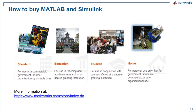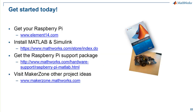It's easy to get access to MATLAB and Simulink — there are several different licenses available including standard, education, student, and home use licenses. Check out mathworks.com's store for more information. To purchase a Raspberry Pi and accessories like the camera board, please visit element14.com. The MATLAB support package for Raspberry Pi can be found at the URL listed. Finally, visit the MakerZone website for additional project ideas involving Raspberry Pi, Arduino, and Lego. Thanks for your attention during today's presentation.